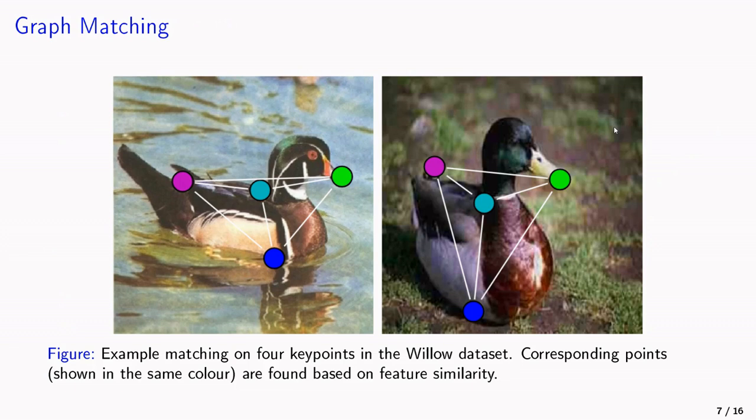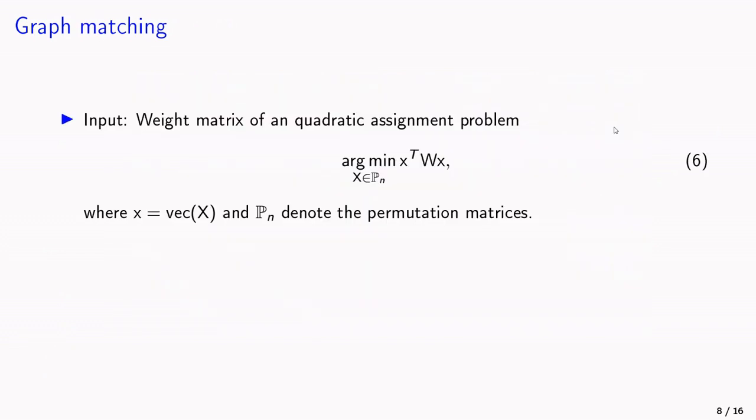The one application we looked at was graph matching. There we want to find a permutation between the key points of these two images. And this can be phrased as a quadratic assignment problem, as you can see in equation 6. In this problem, one optimizes over vectorized permutations.